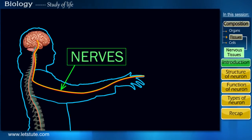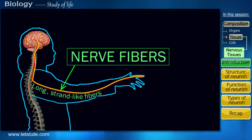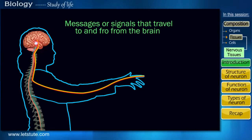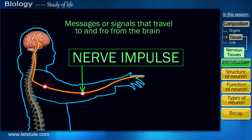And as we can see, they are long, strand-like fibers, and hence called nerve fibers. And these messages or signals that travel to and fro from the brain by the nerve fibers are called nerve impulses.